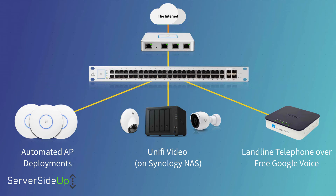Looking at the network topology, it seems to be pretty straightforward. We have our internet connection running down into a router, from the router into the switch. But the best thing about this network is it's going to be very flexible and very automated. So for every access point that we plug in, we're going to set that up to automatically join our network and provision the settings as needed.